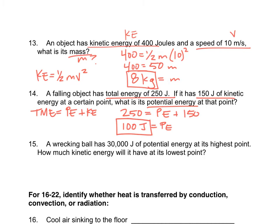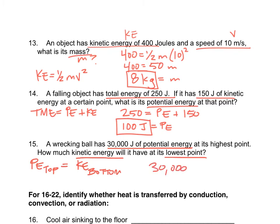Number 15: a wrecking ball has 30,000 joules of potential energy at its highest point. How much kinetic energy will it have at its lowest point? Since PE at the top equals KE at the bottom, the kinetic energy at the lowest point is also 30,000 joules.